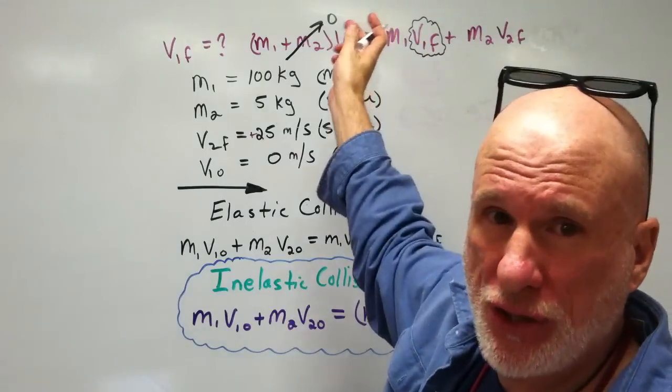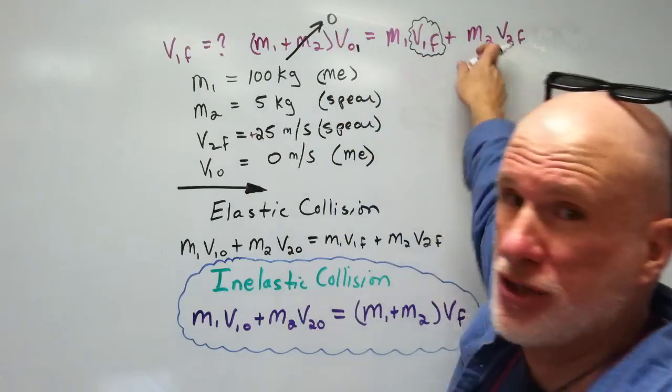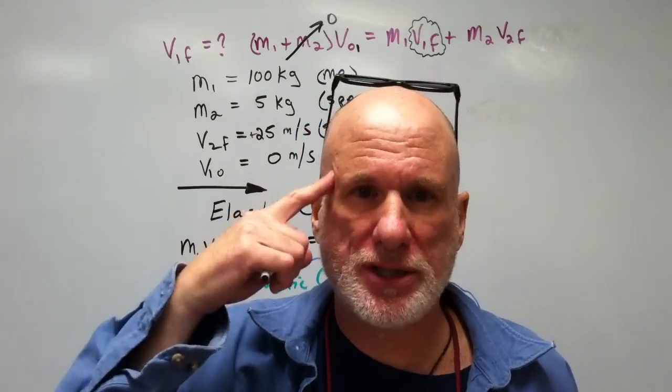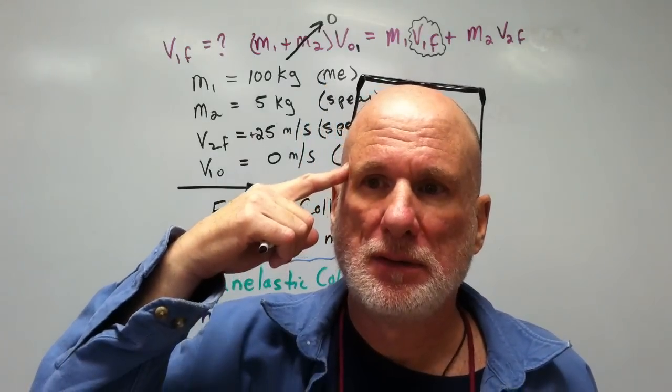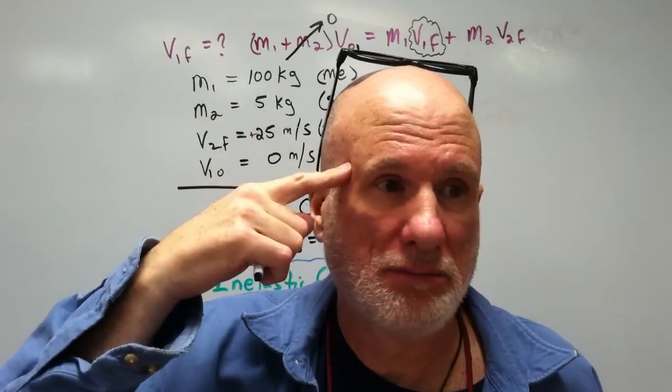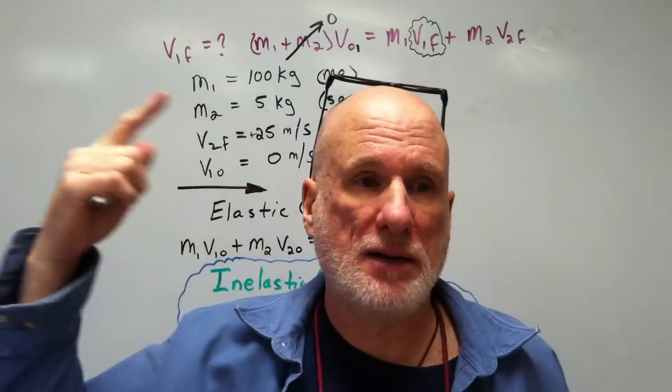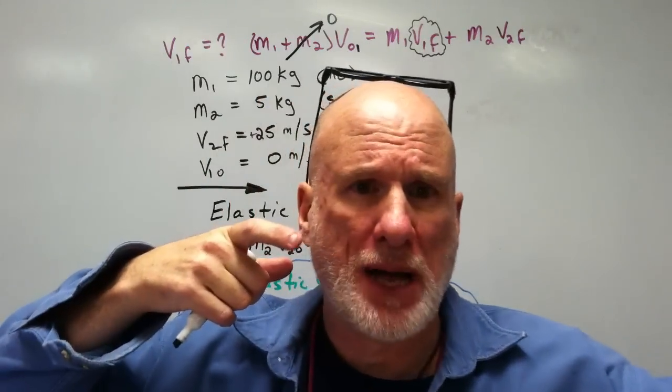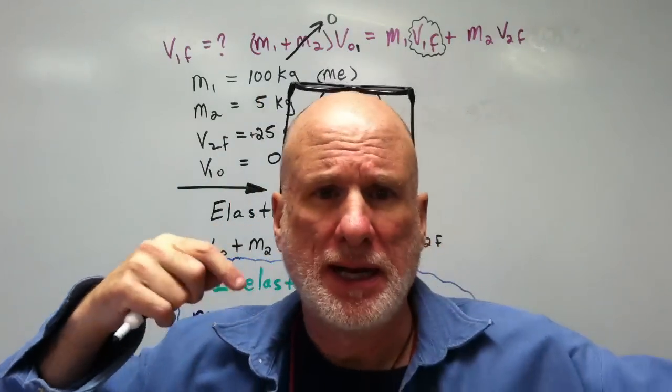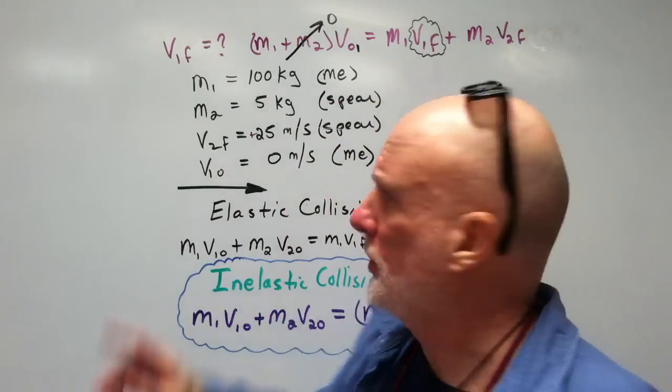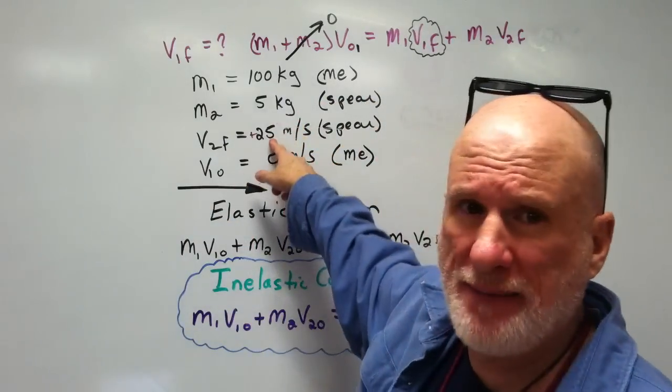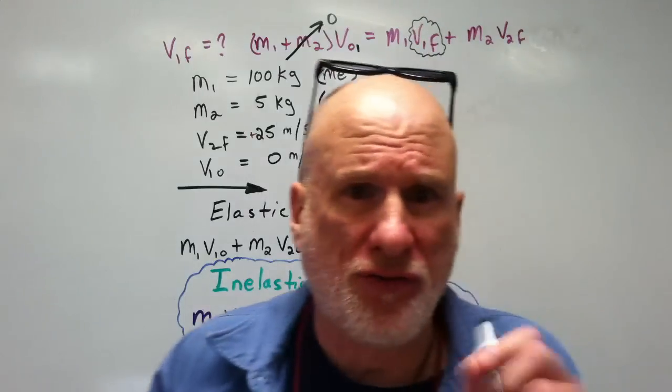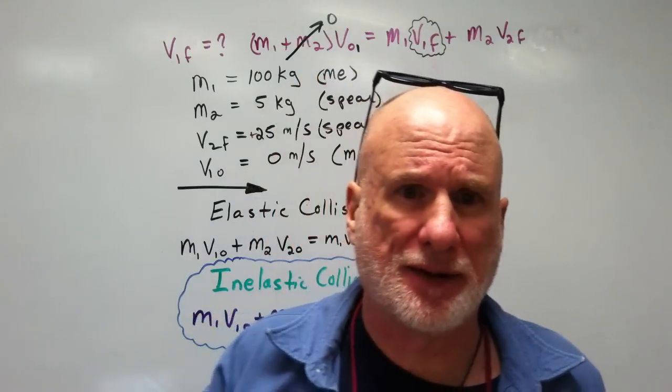M₂, V₂ final. Okay, what's V₂ final? Well, two is the spear, F is what velocity is the spear going to acquire. I'm going to apply a force to the spear, it's going to accelerate to a constant velocity of 25 meters per second. So V₂ final is 25 meters per second.